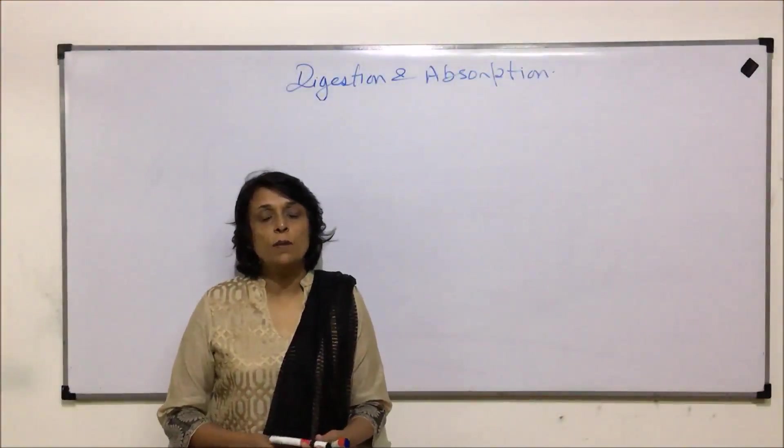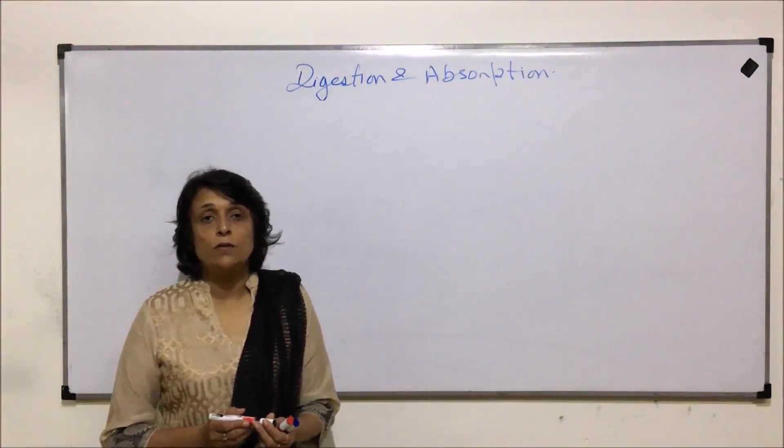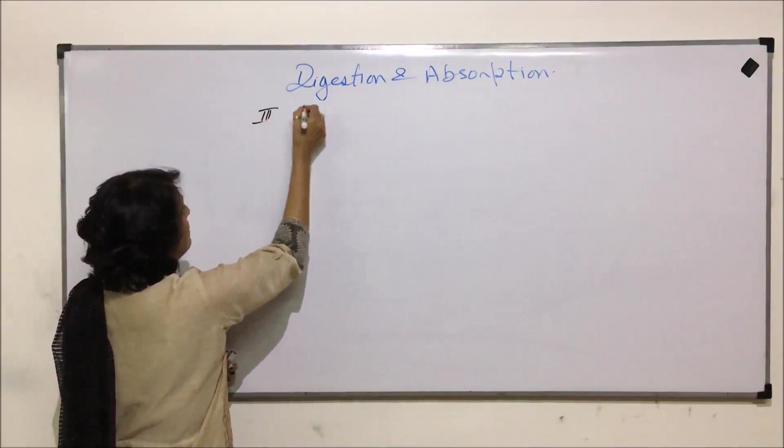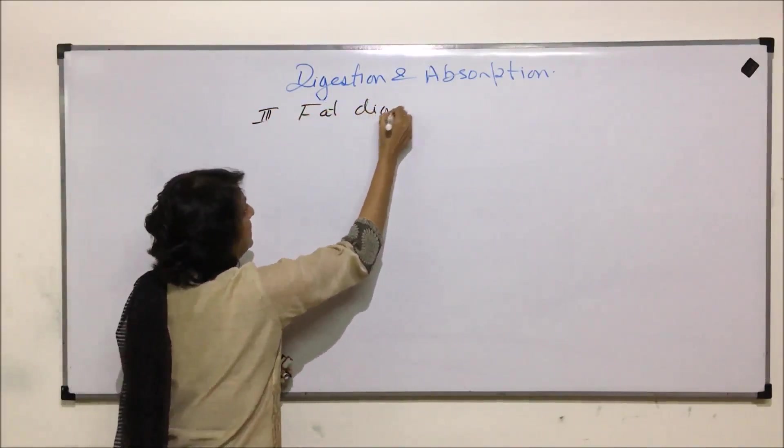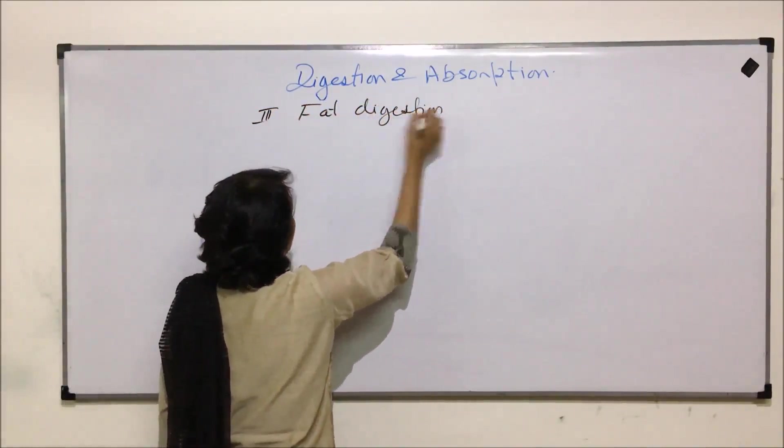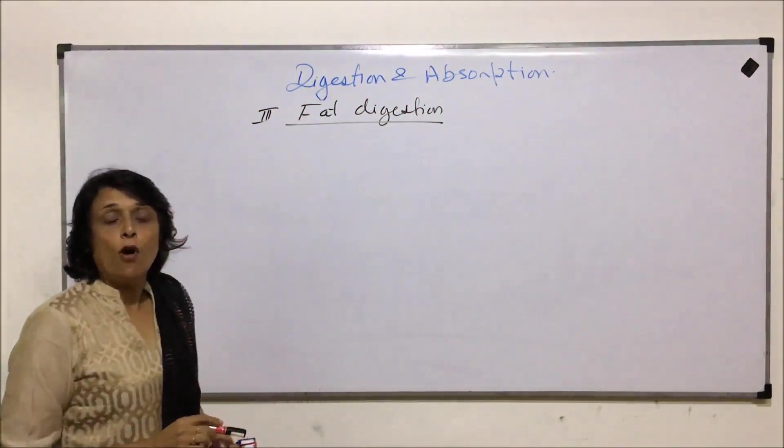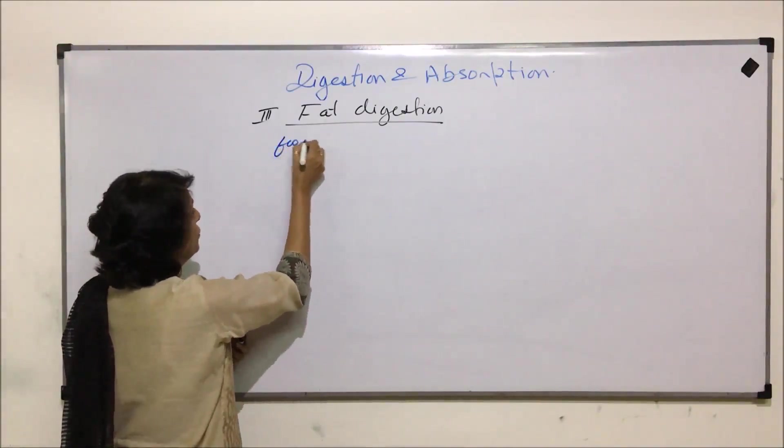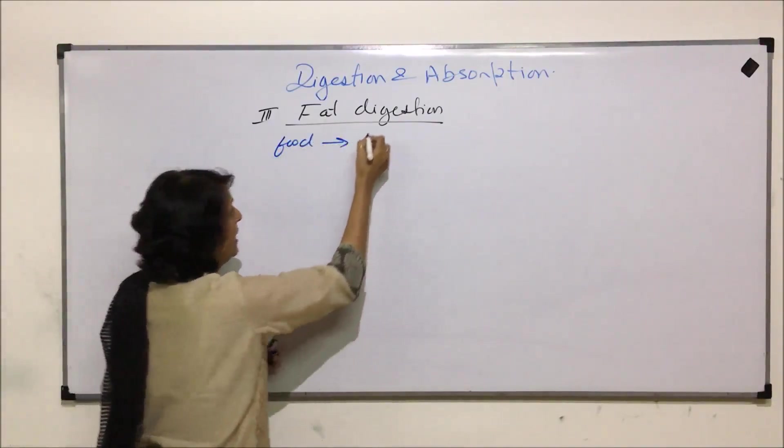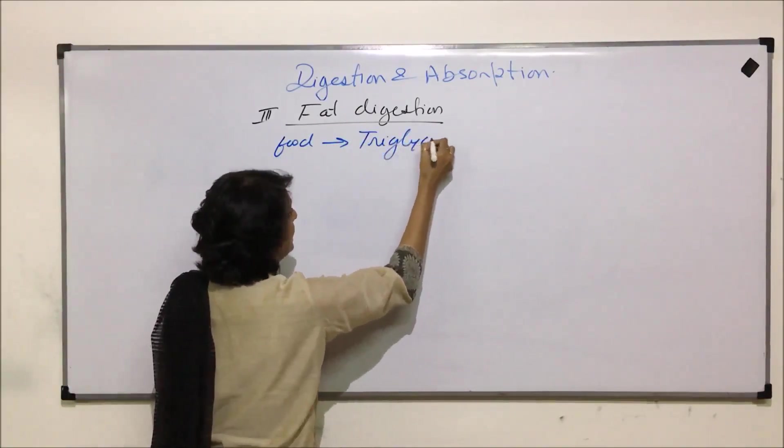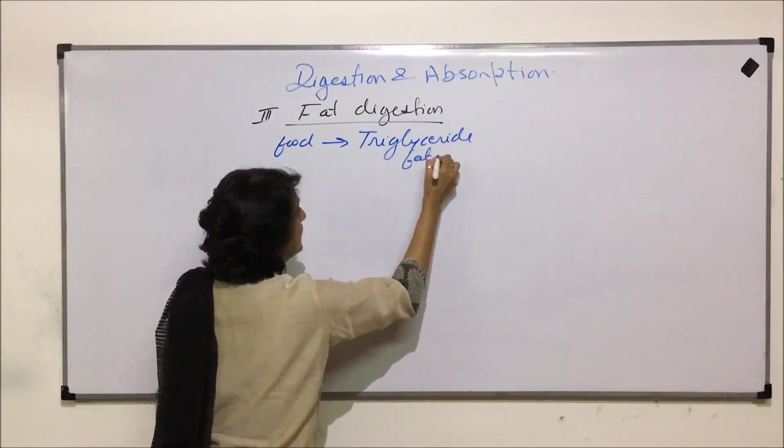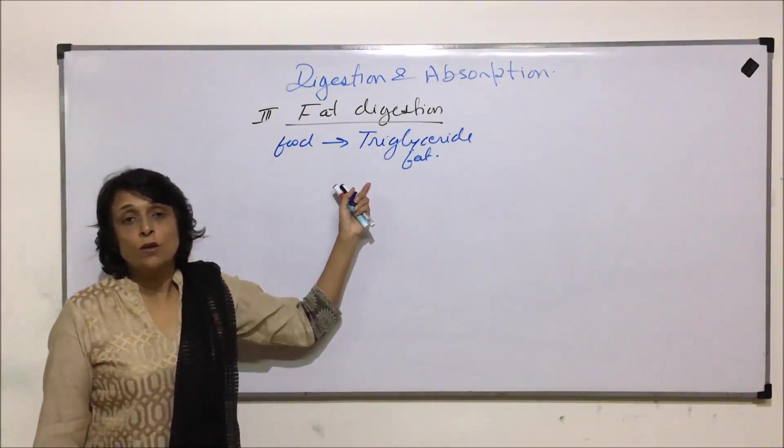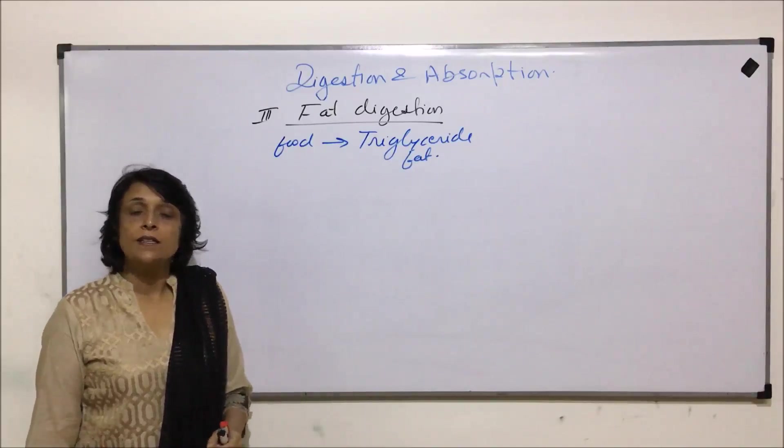In this section we'll talk about the next nutrient which gets digested, and that is fat. The most common form in which we consume fat is triglyceride, so the food which we take in mainly has triglyceride fat. We'll quickly understand the function of this so that it helps us in understanding the process of digestion.